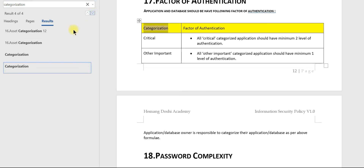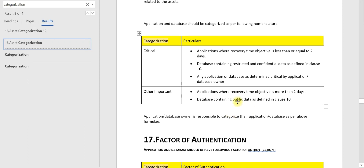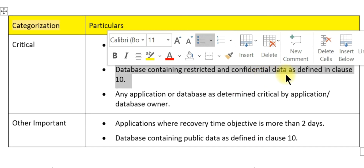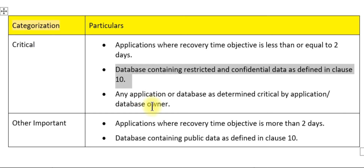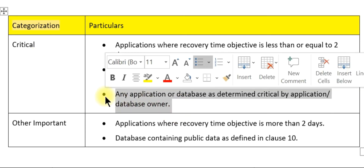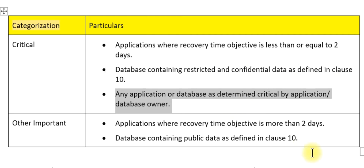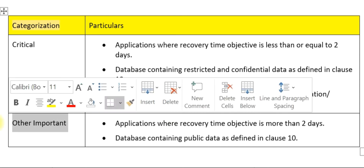Clause 16 is about asset categorization. If you see, applications and databases should be categorized as per the following nomenclature: databases containing restricted and confidential data as defined in Clause 10 should be categorized as critical. Also, any other database determined critical by the application or database owner should also be considered critical. All other databases will be considered as other important.